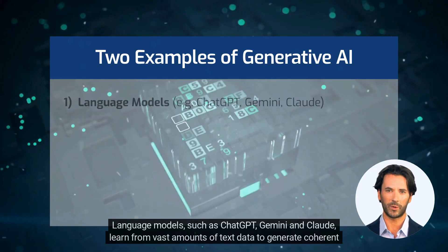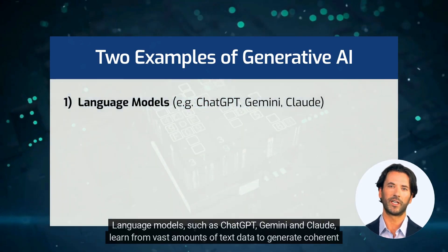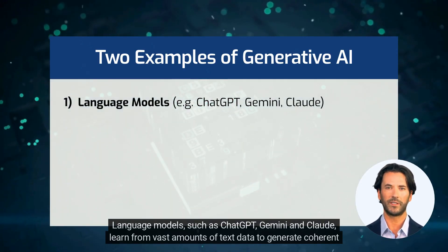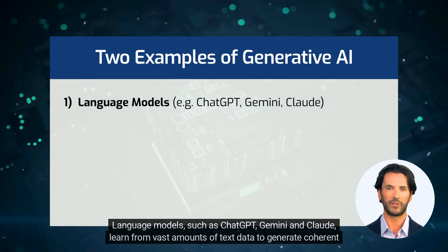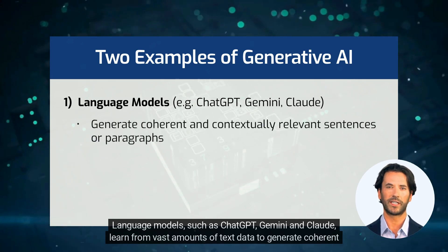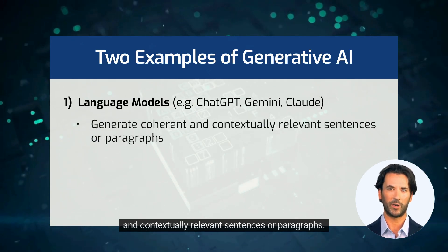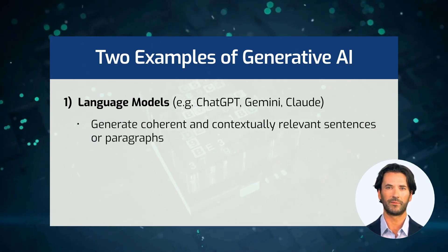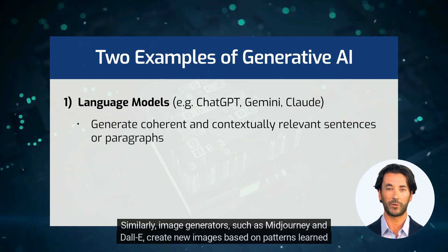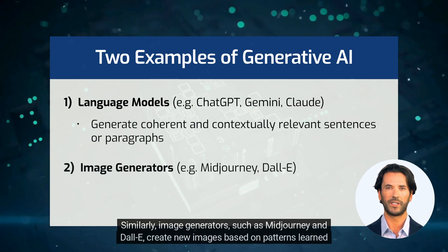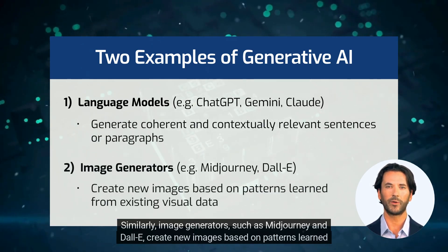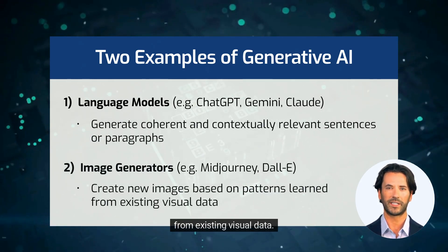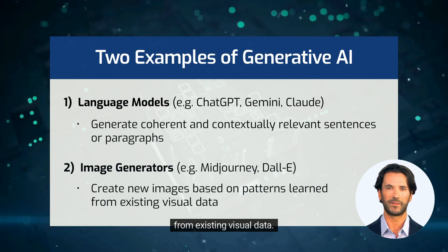Language models such as ChatGPT, Gemini and Claude learn from vast amounts of text data to generate coherent and contextually relevant sentences or paragraphs. Similarly, image generators such as Midjourney and DALL-E create new images based on patterns learned from existing visual data.